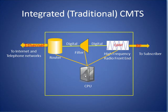Typically a processing unit provides processing functionality for all three of these. The yellow box here suggests that all this functionality is typically encapsulated into a single box. Information from the subscriber's cable modem arrives at the CMTS, where it is demodulated by the radio frequency front end.